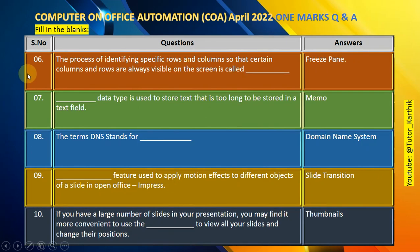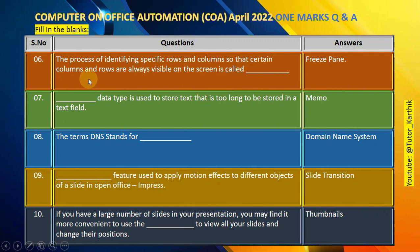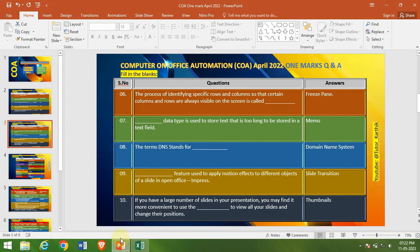Question number 6: The process of identifying specific rows and columns so that certain columns and rows are always visible on the screen is called freeze panes.